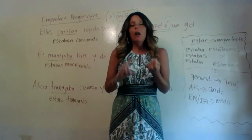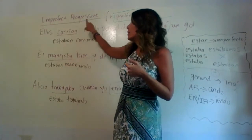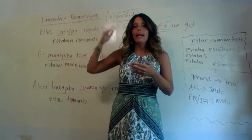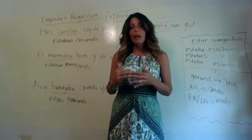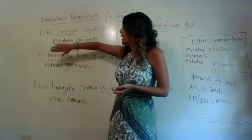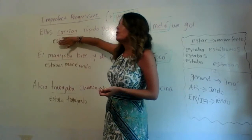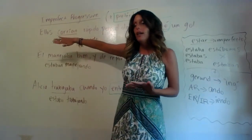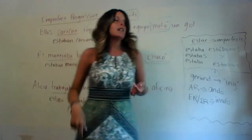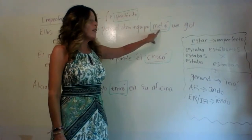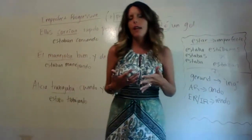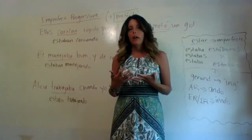We are talking about the imperfect progressive and how it can be interchangeable with the imperfect in certain scenarios. We're also showing that the regular imperfect is often used in sentences along with the preterite — so we're doing a couple of things at once because they are related.